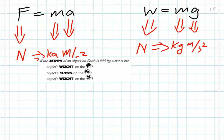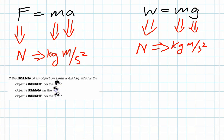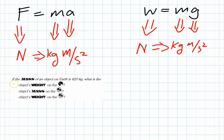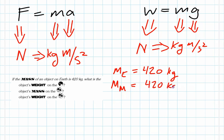Let's look at a classic example of how you might work with the concept of mass and weight. If the mass of an object on Earth is 420 kilograms, what is the object's weight on Earth, its mass on the Moon, and its weight on the Moon? One of the universal constants is the fact that mass is the same no matter where you go. So the mass on Earth is given as 420 kilograms, and the mass on the Moon will also be 420 kilograms.